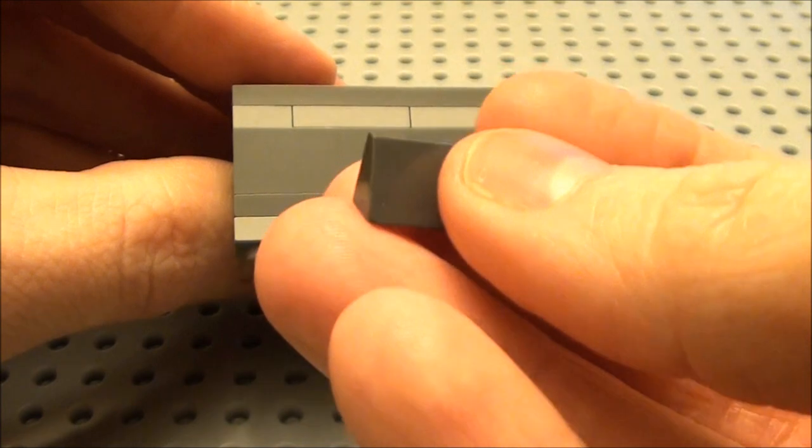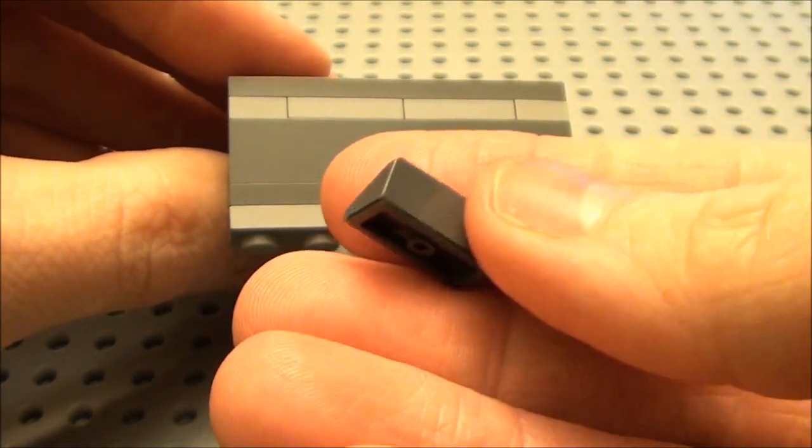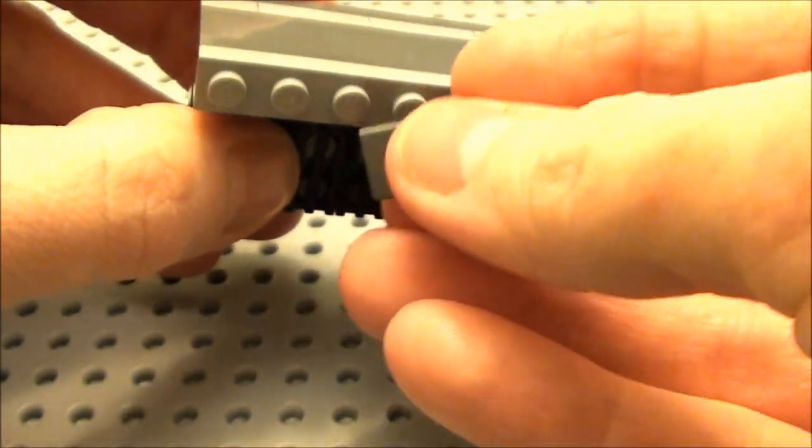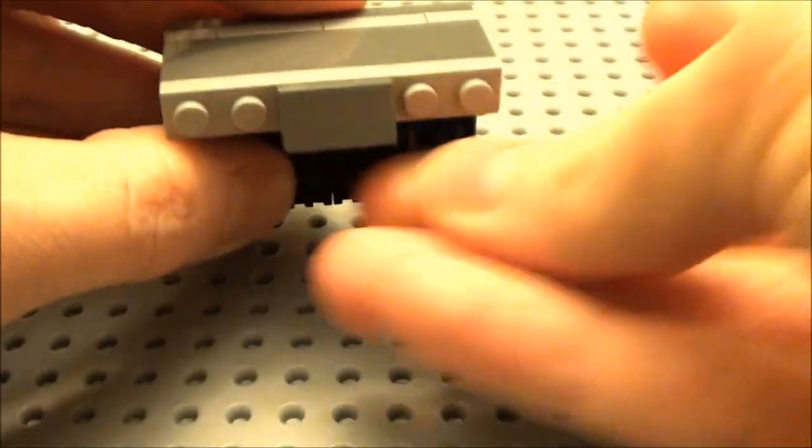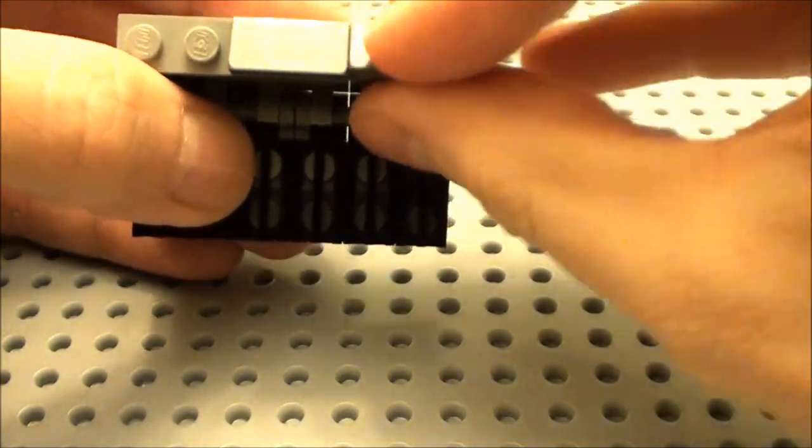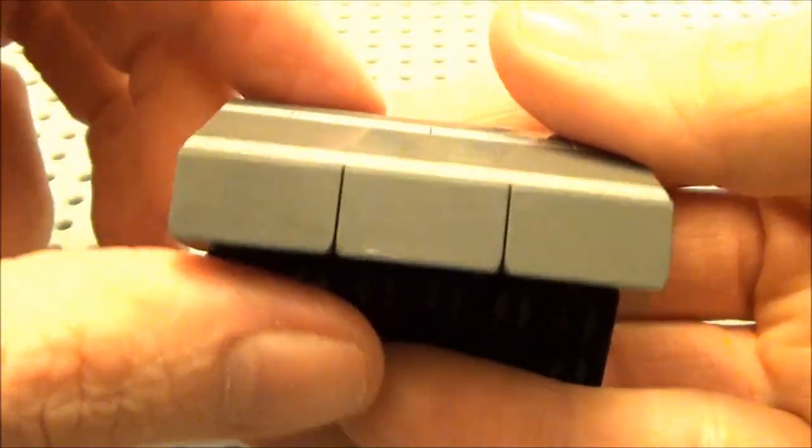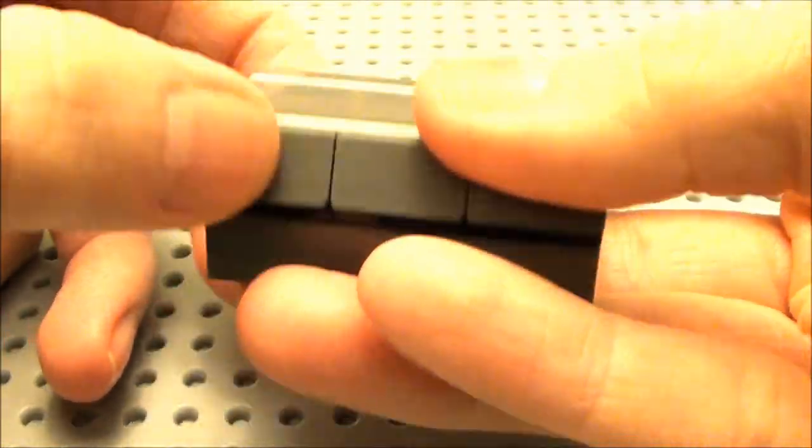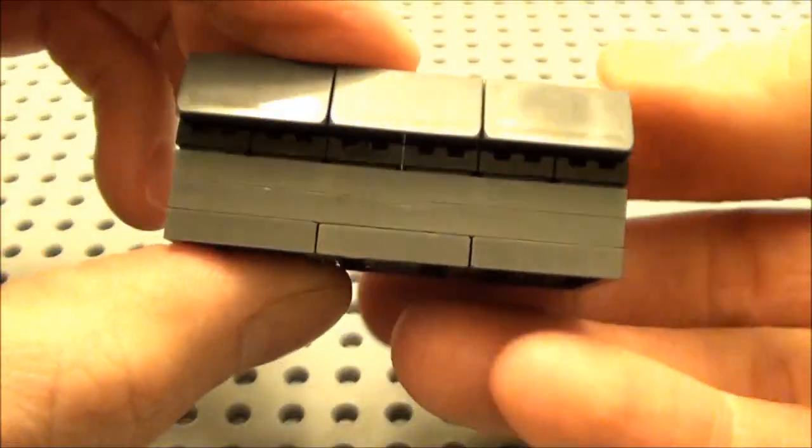And finally I'm just going to take three of these 1 by 2, 30-degree sloping bricks. I'll place them here along the front. This will be the front of our lid. There you have it. There's the working lid for our barbecue. See it closes nice and it's flush.